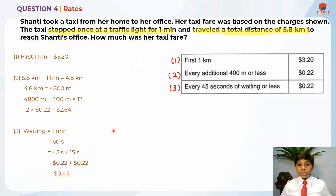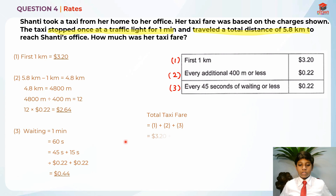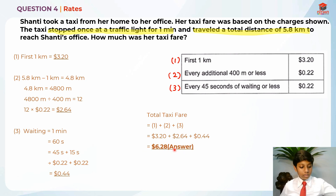To find the total taxi fare, we add all three parts: $3.20 + $2.64 + $0.44 = $6.28. So her total taxi fare is $6.28. I hope you understood my explanation for question 4 — thank you and bye-bye, I'll see you in my next video!